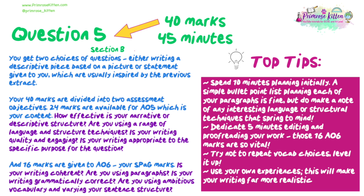Top tips for Question Five: spend ten minutes planning — a simple bullet point list planning each paragraph is fine, but make note of any interesting language or structural techniques that spring to mind. Spending time planning will mean your writing is focused. Dedicate five minutes to editing and proofreading your work, as those 16 AO6 SPAG marks are vital. Try not to repeat any vocabulary choices — remember to level it up. Use your own experiences, as this will make your writing far more realistic. And that's it — you have finished your AQA GCSE English Language Paper One. Well done!